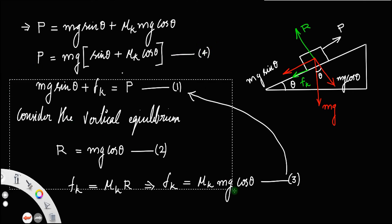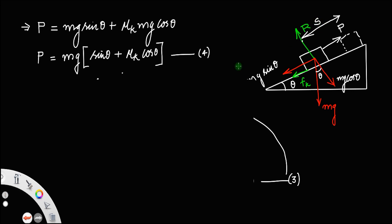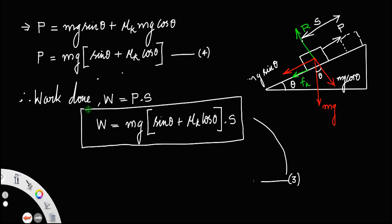The work done is always force times displacement. If we move this mass a distance s along the plane with force P, then work done W = P × s. Substituting equation four, W = mg(sin theta + mu k cos theta) × s. That is the expression for work done to move a body along the inclined plane.